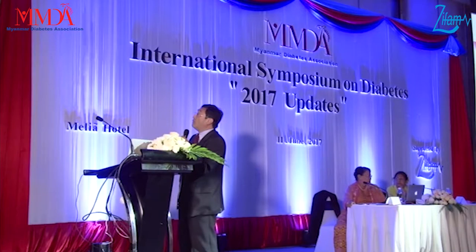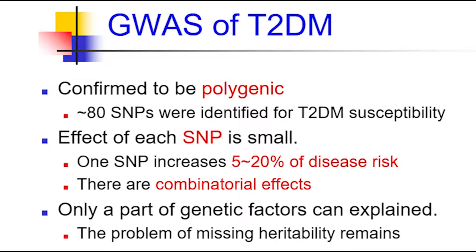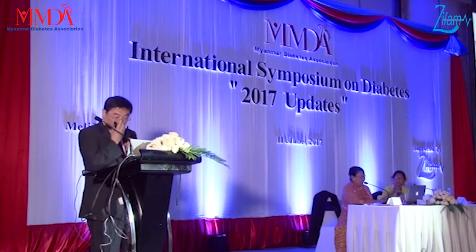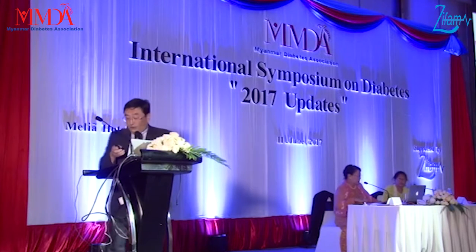By doing so, this type of analysis — GWAS, genome-wide association study — was very, very powerful to identify genetic loci for multifactorial diseases, including diabetes, metabolic syndrome, and things like that.